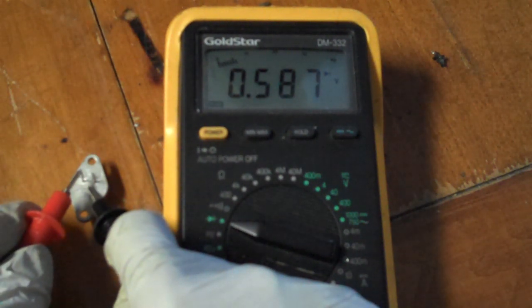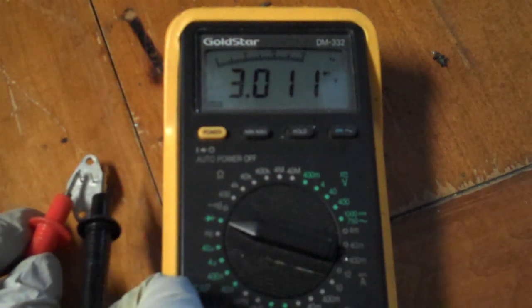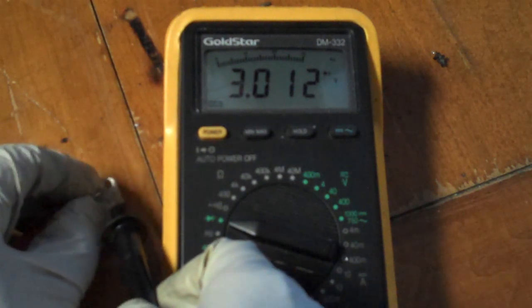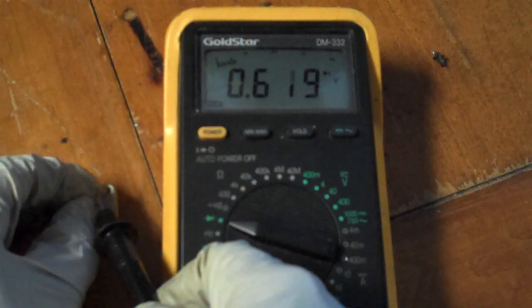So this looks like the pin on the left would be the base. So we'll go between the two pins, and we should get about half a volt, which we do—we get 0.6.